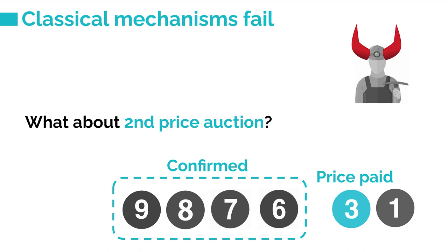In particular, first price auctions encourage untruthful reporting. For example, you may be incentivized to bid barely enough to be among the top K so you can still get confirmed but pay less. So that's not too great. One obvious question is: why don't we just use the classical body of work in mechanism design? We have learned from auction theory that second price auctions are awesome auctions.